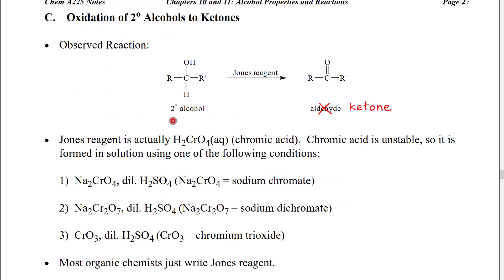We're now going to look at the oxidation of secondary alcohols to ketones. Our observed reaction looks like this. A secondary alcohol is going to have two carbon groups attached to the alcohol carbon. Those two carbon groups do not have to be the same. So I've indicated one as r and the other as r prime.